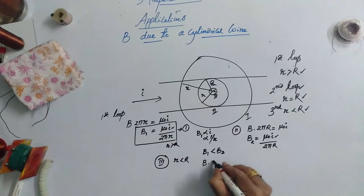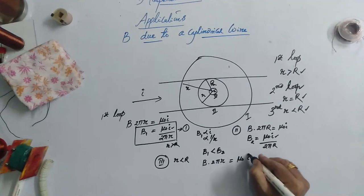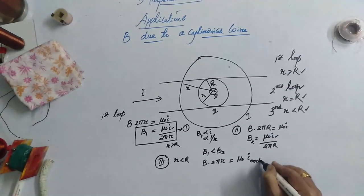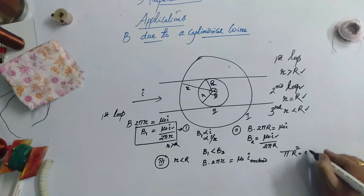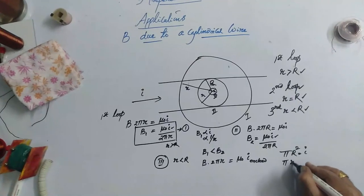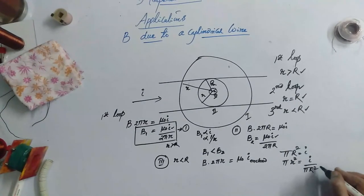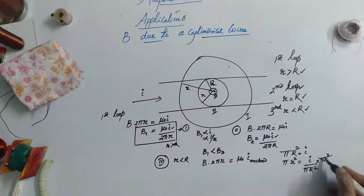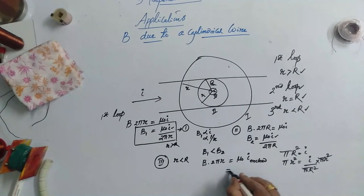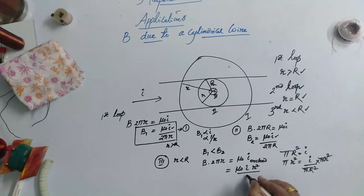So when R is less than R, B times 2 pi R I can take is equal to mu 0 I enclosed. In the cross sectional area of pi R square, I current is there. So what about the cross section of pi small r square? I have to take I by unitary method, pi capital R square times pi small r square. So this pi can be cancelled and then I can replace this I by I times R square by capital R square.